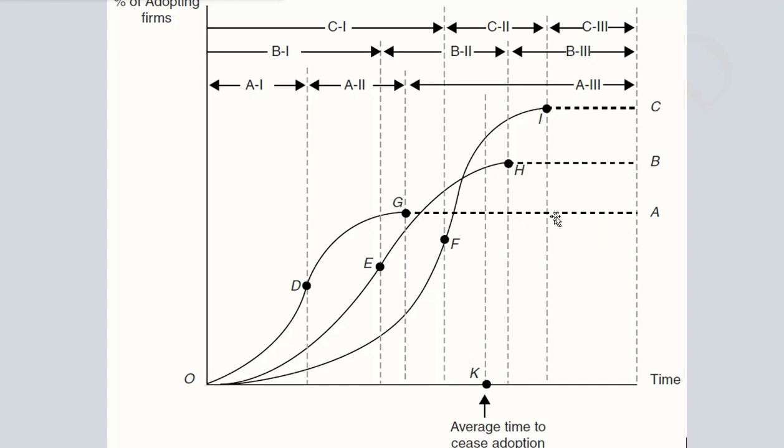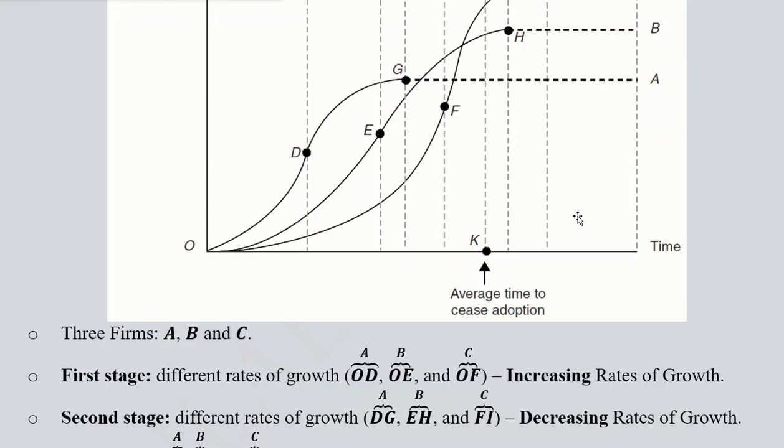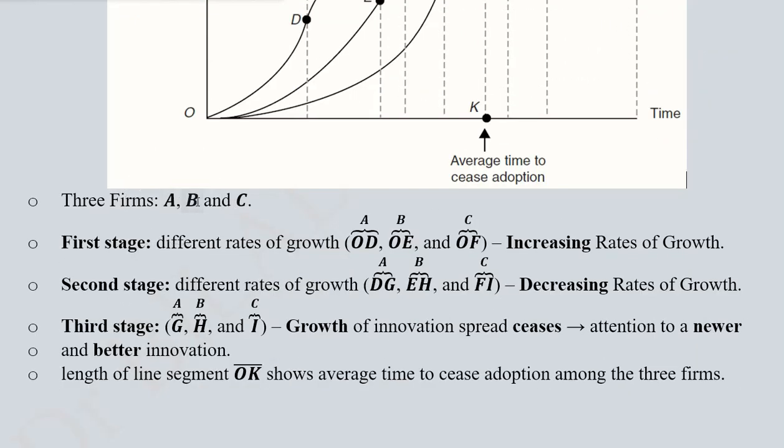Because afterwards, there will be interest in some other new invention or innovation, and we will have another curve for all of these firms. So these are the three firms that we talked about: A, B, and C. This was the first stage for firm A, for firm B, for firm C.